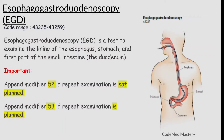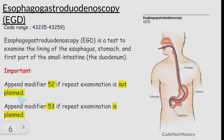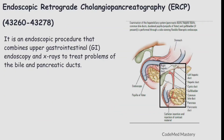The next guideline is about esophagogastroduodenoscopy (EGD), code range 43235 to 43259. EGD is a test to examine the lining of the esophagus, stomach, and first part of the small intestine (duodenum). The important guideline is: append modifier 52 if a repeat examination is not planned, and append modifier 53 if a repeat examination is planned. This guideline is on CPT manual page 350 under EGD.